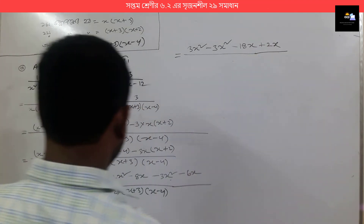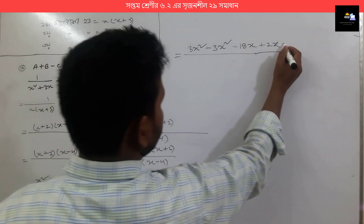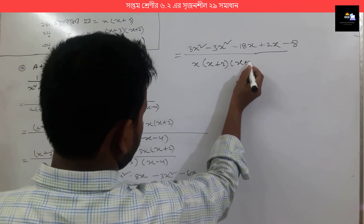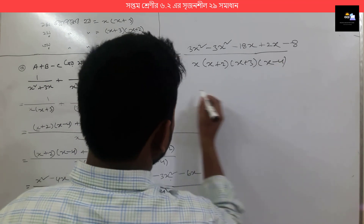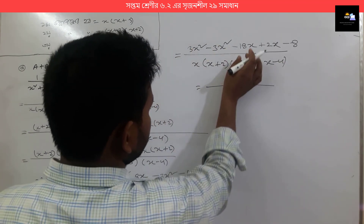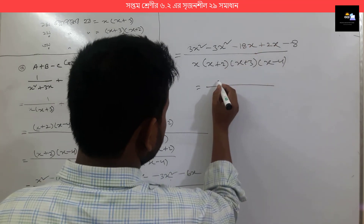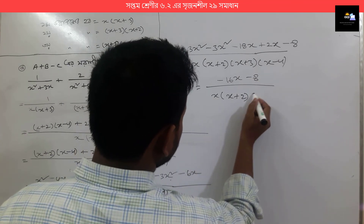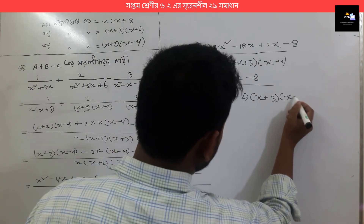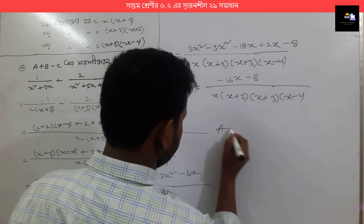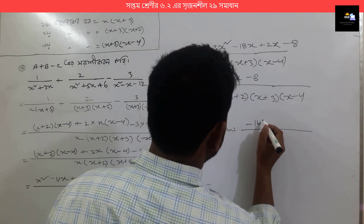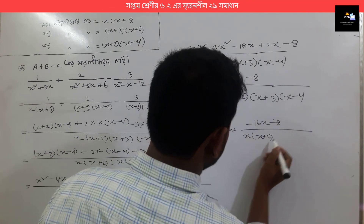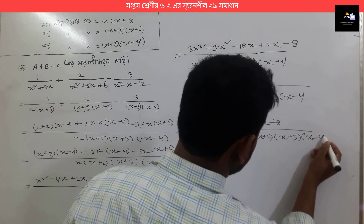Plus 2x squared. So we have 3x squared minus 8. We have 3x squared. It is 2x squared. So just let's have 4x squared, then 3x squared. The number is 4, 1, 0. This is the answer: x is minus 16, x is minus 8, x into x plus 2, x plus 3, x minus 4.